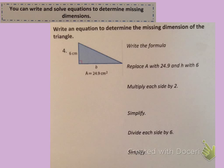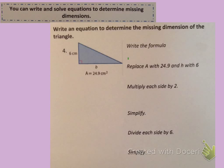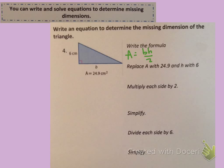You can write and solve equations to determine the missing dimensions of a triangle. For example, write an equation to determine the missing dimension of the triangle. Our first step is to write the formula. On these problems, it's probably going to be easier to write area equals the base times the height divided by two — it still means the same thing, half of the base times the height, just written a little differently, and it will probably make it easier as we solve.